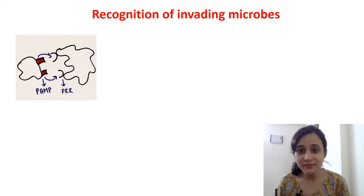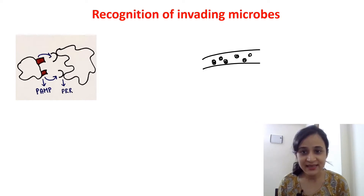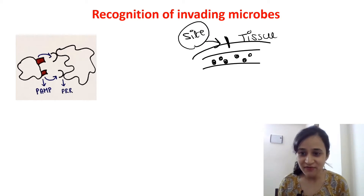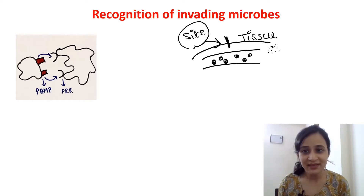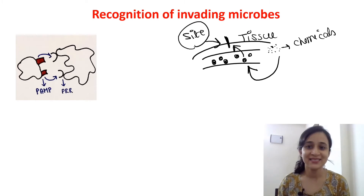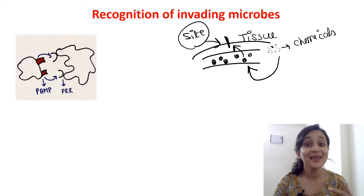Suppose this is the bloodstream with some phagocytic cells moving through the blood, and this is the tissue. Here infection occurs — this is the site of infection. When infection occurs, this tissue secretes some chemicals. Those chemicals are secreted by the tissue and induce phagocytic cells to enter at the infection site. So it is now clear how phagocytic cells are recruited to the infection site.